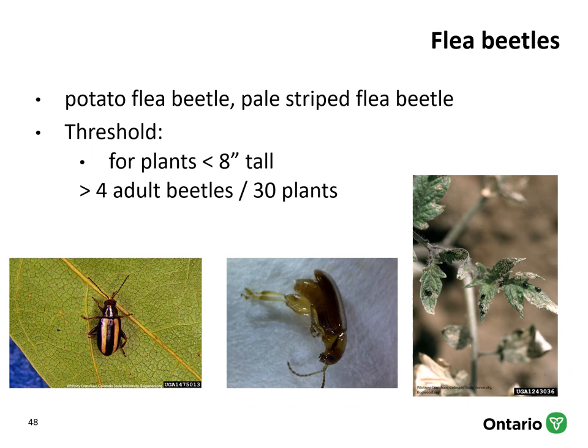Flea beetles are another pest I won't spend much time on. The species most commonly found in these crops are potato flea beetle and the pale striped flea beetle. Their hind legs are very well adapted to jumping — they will really jump off plants when they see you coming, making them somewhat challenging to scout for. They cause the most injury when plants are small; larger plants tend to grow quickly and injury is less significant. For plants less than about 20 centimeters or 8 inches tall, the threshold is more than four beetles per 30 plants.